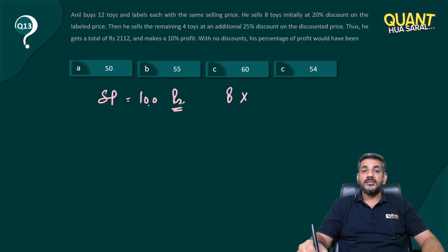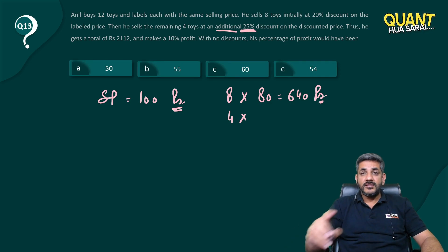sold at 20% discount. 100 discounted by 20% becomes 80, so eight of them are sold for Rs. 640. The remaining four he sold at an additional 25% discount. Additional means there is already